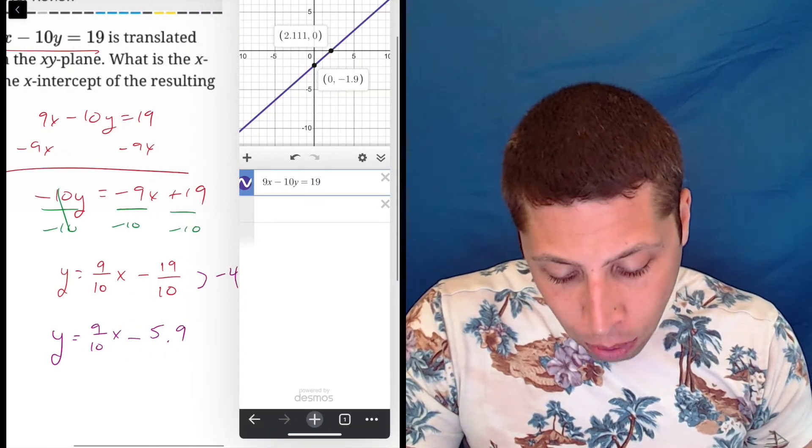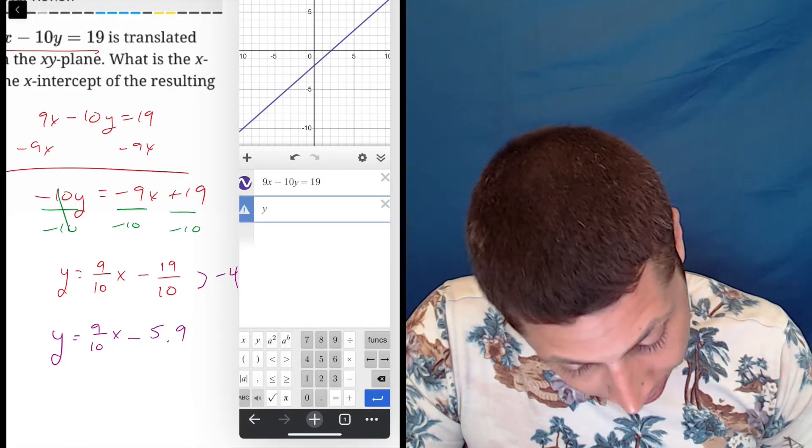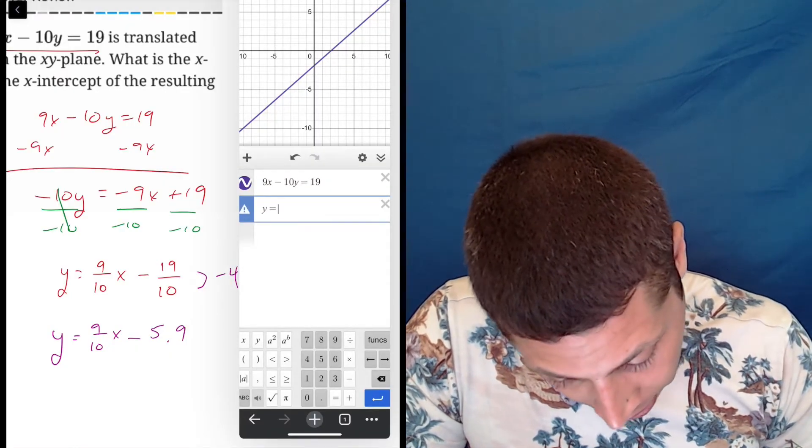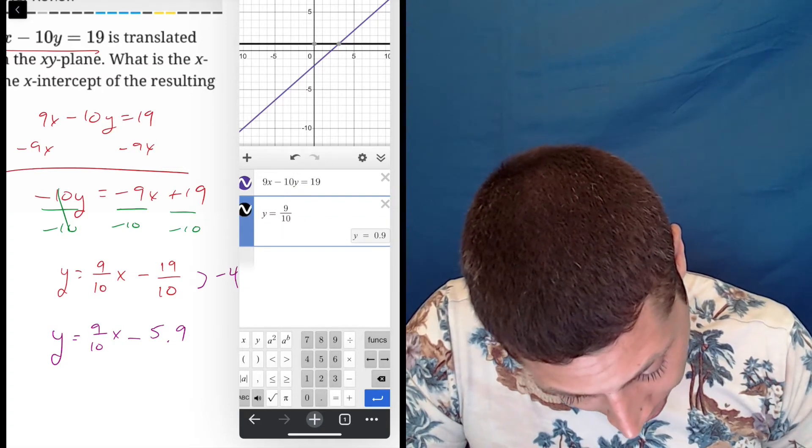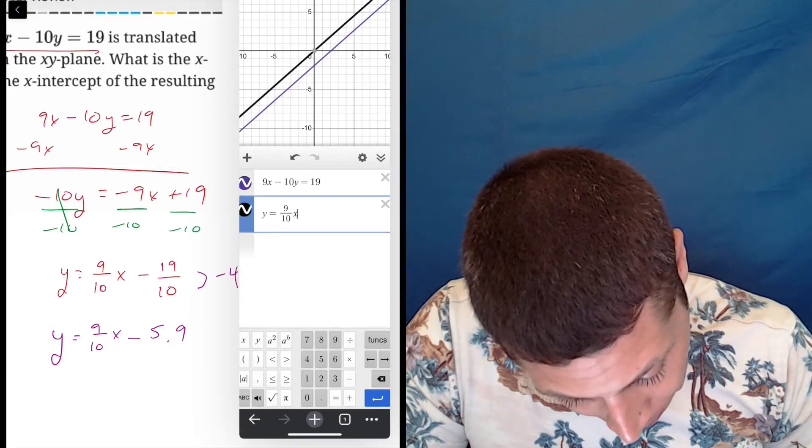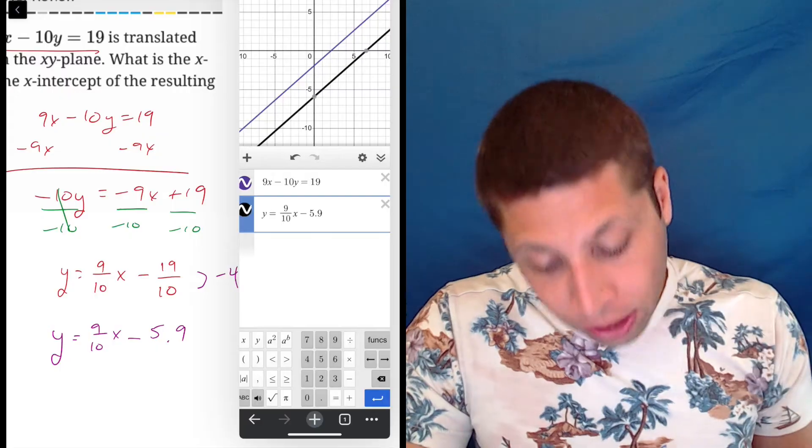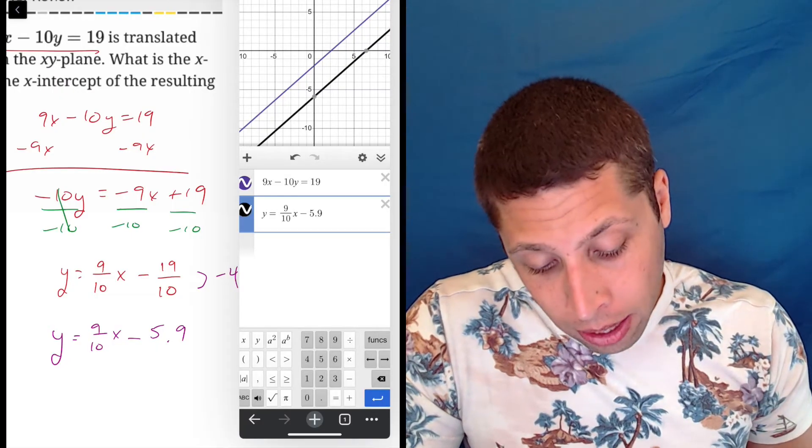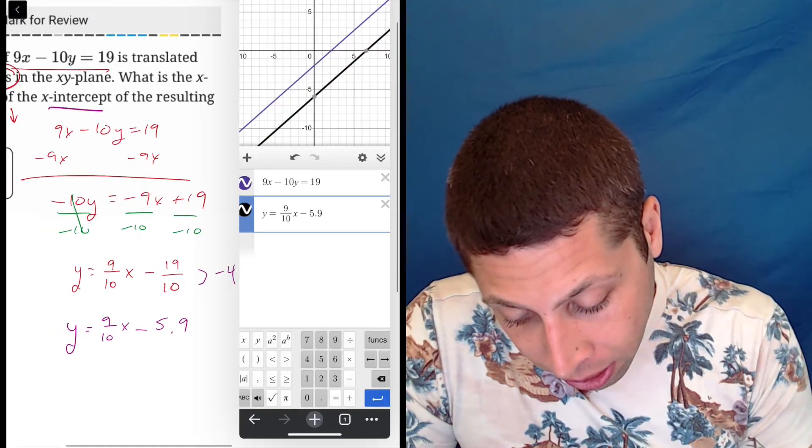But now I have another equation and I can graph this. I can graph it as written Y equals 9 tenths X minus 5.9. And now I can see the shift, right? So this is more me checking than anything else. I can see the shift and I can see now they wanted the X intercept.